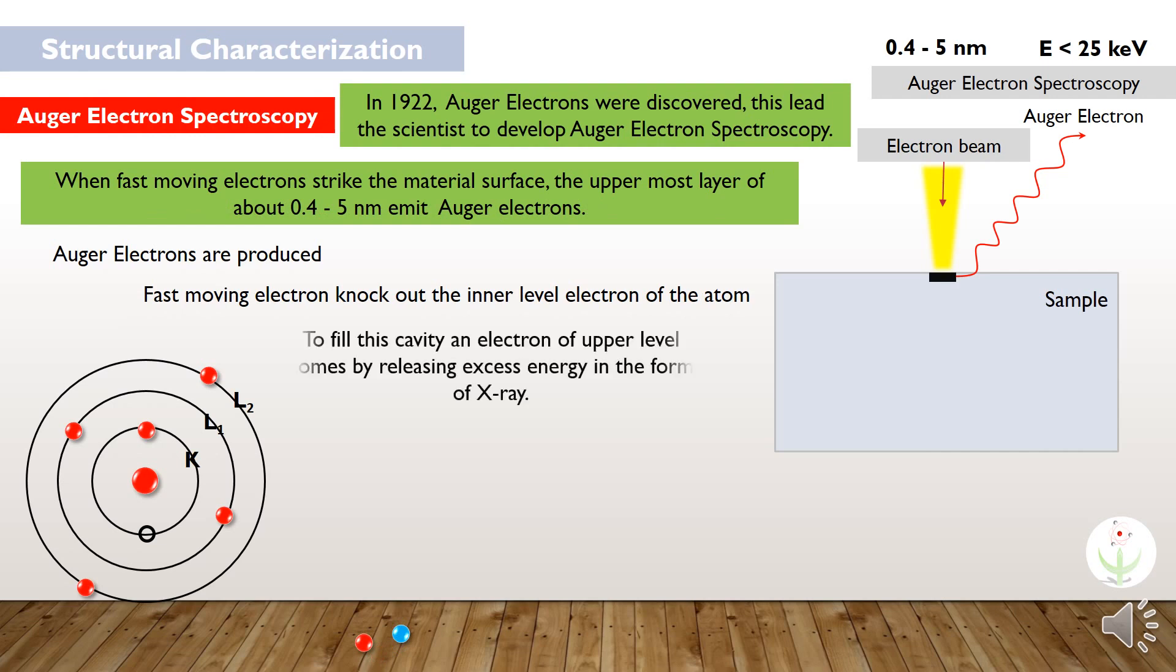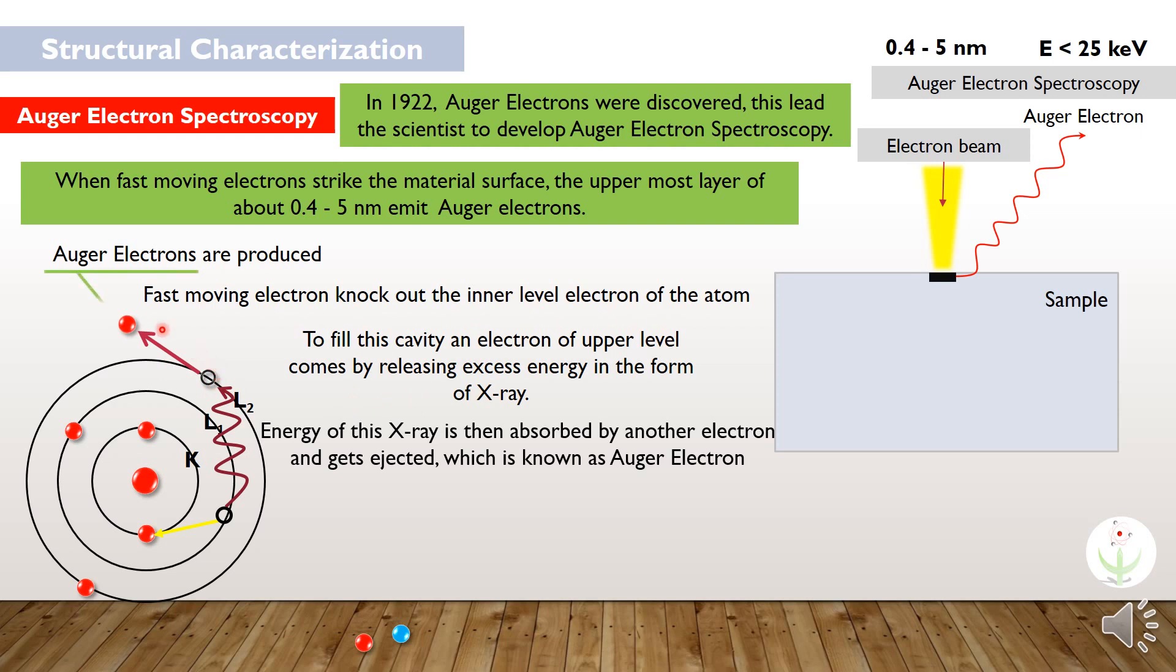Auger electrons are produced when fast-moving electrons knock out the inner-level electron of the atom. To fill this cavity, an electron of upper level comes by releasing the excess energy in the form of X-ray. Energy of this X-ray is then absorbed by another electron and gets ejected, which is known as Auger electron.